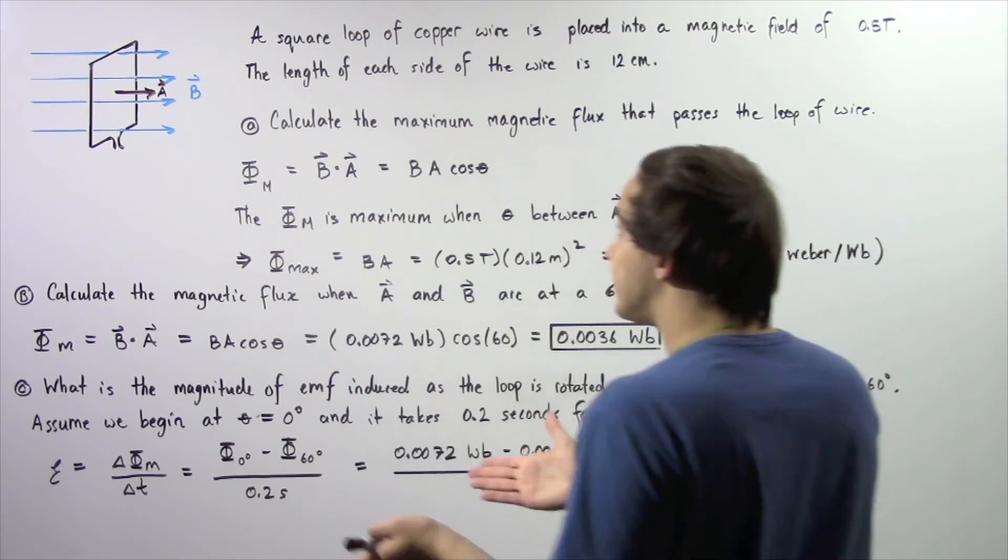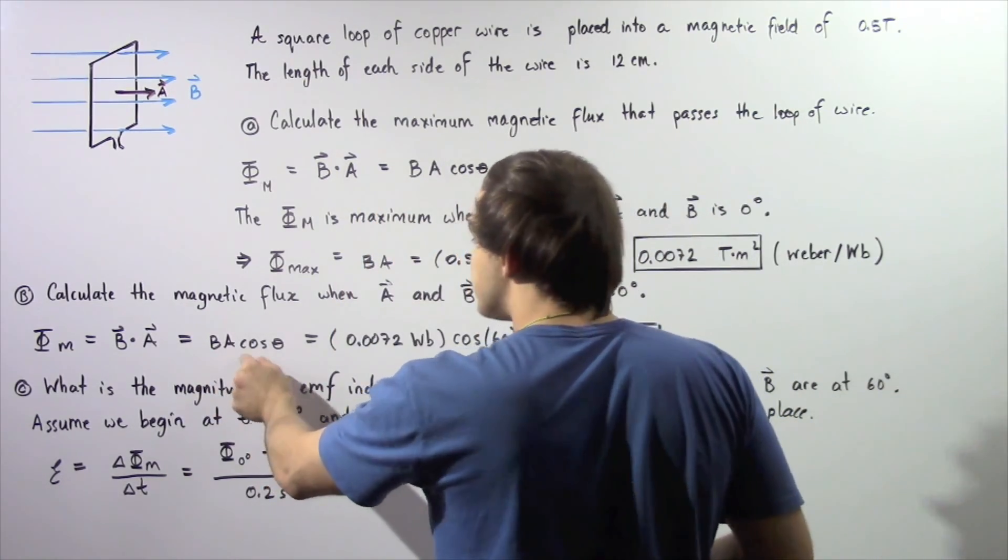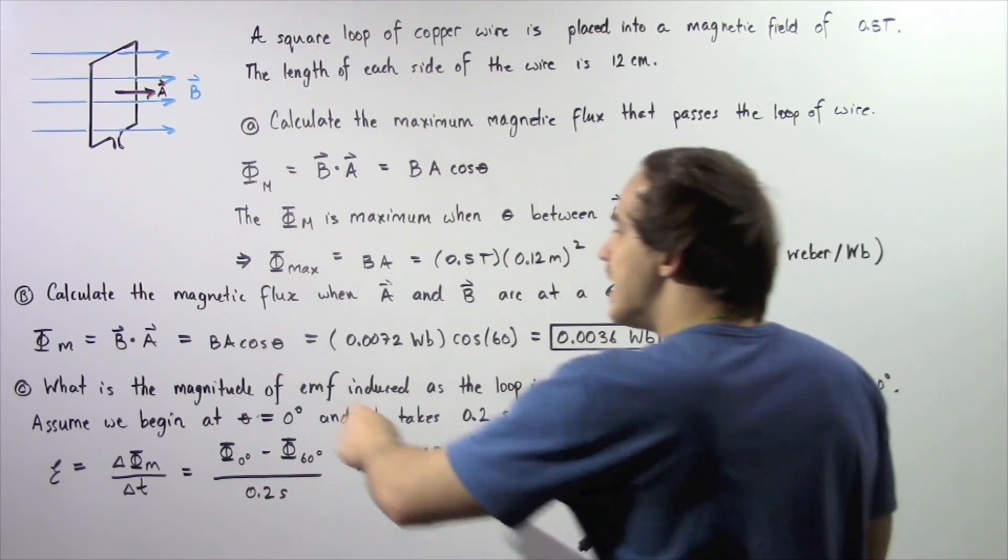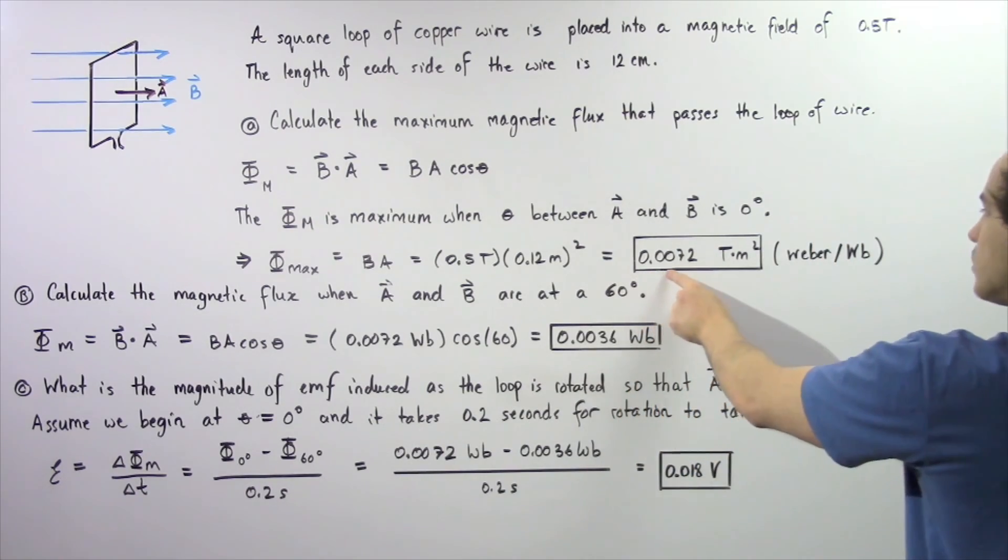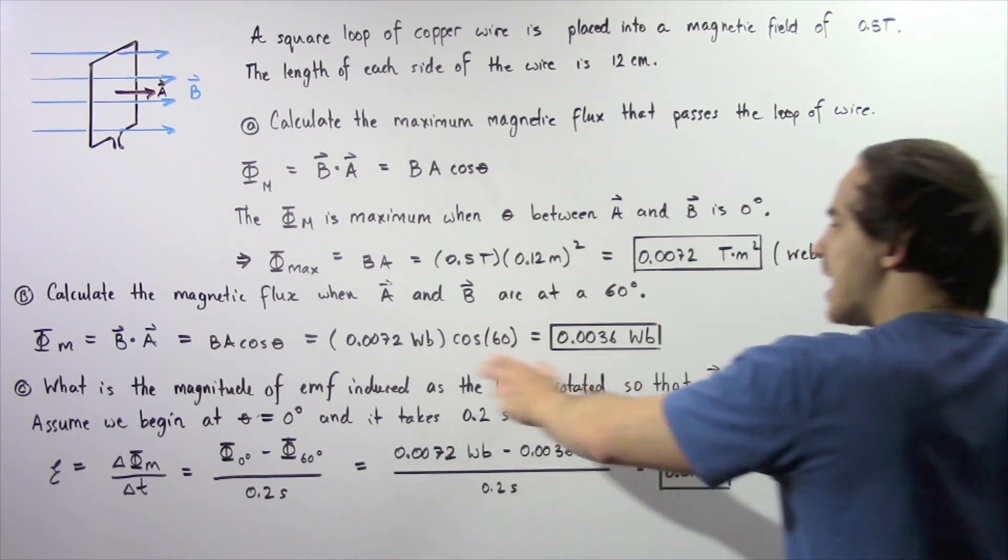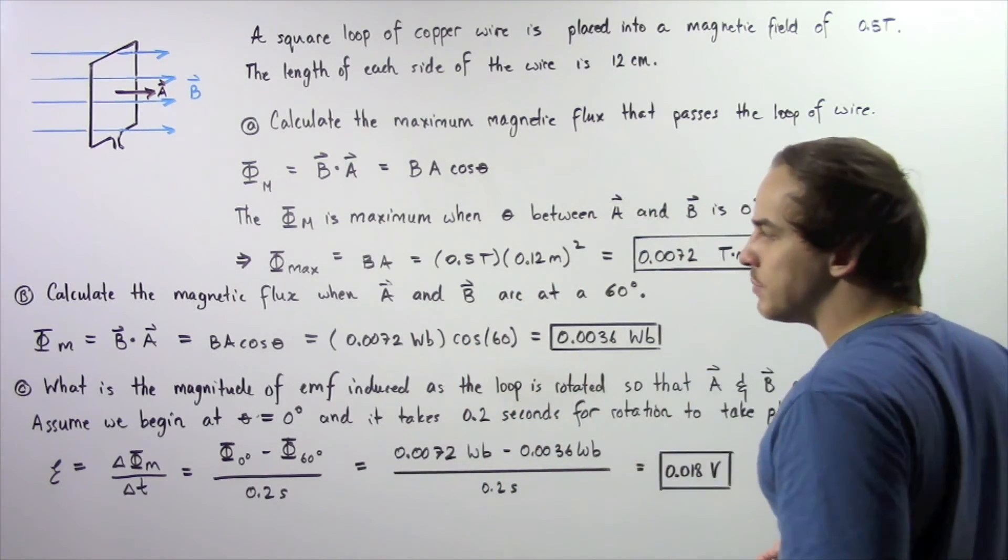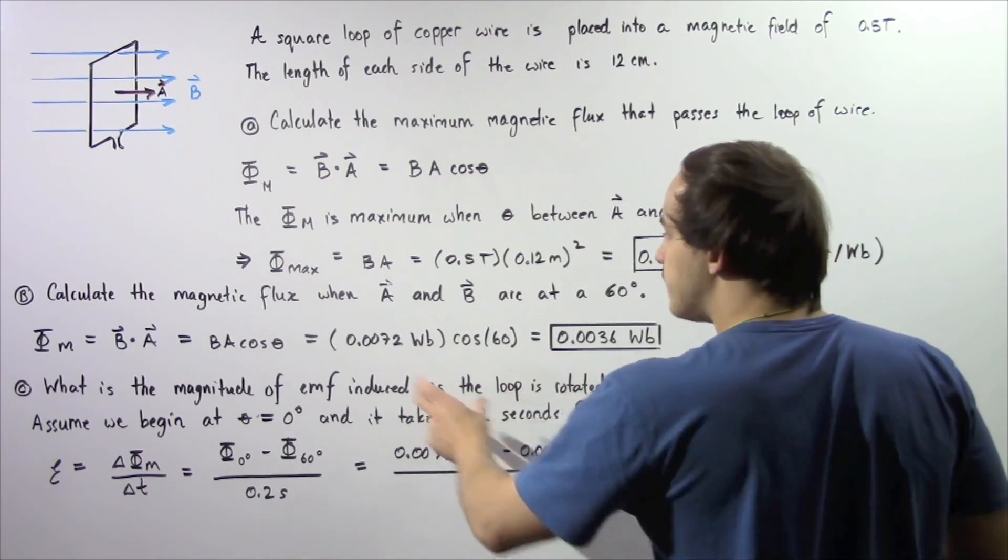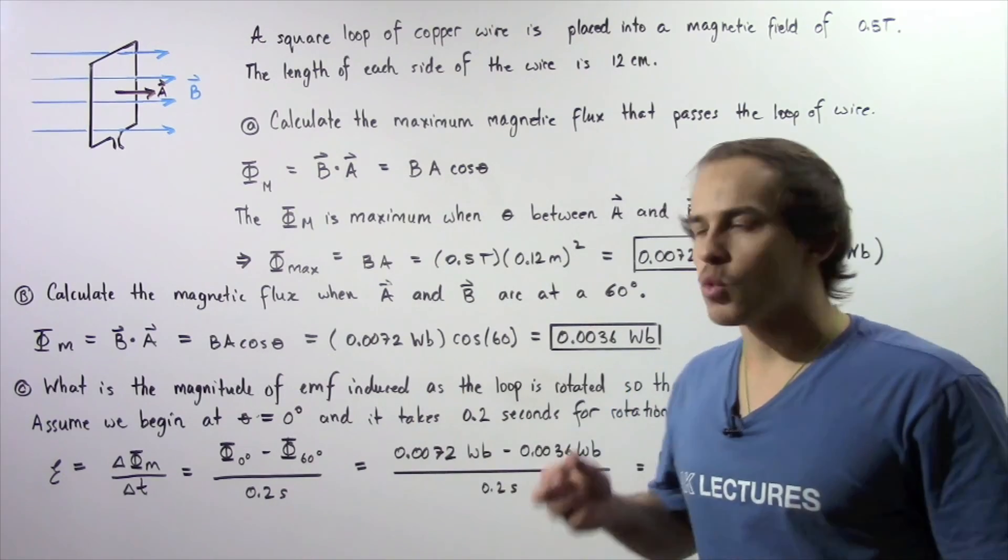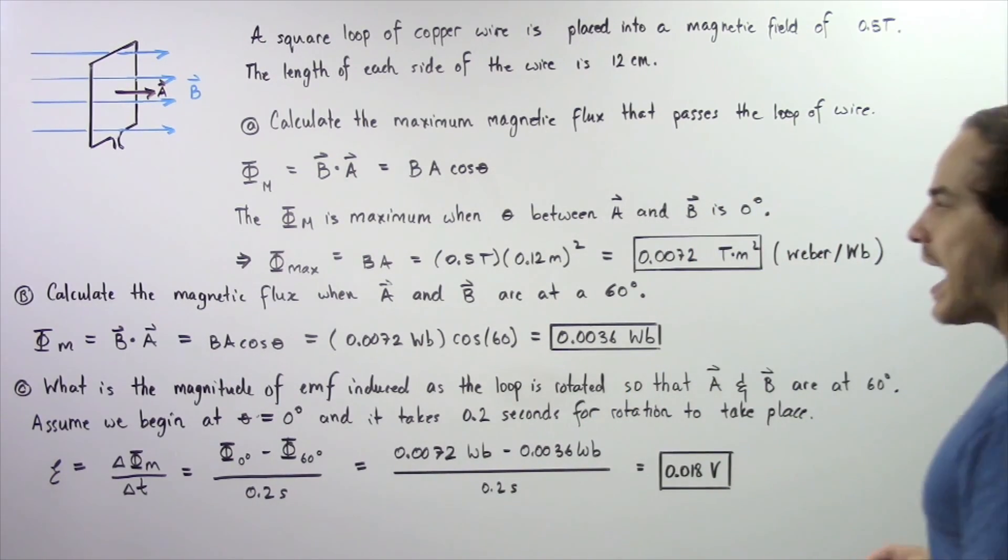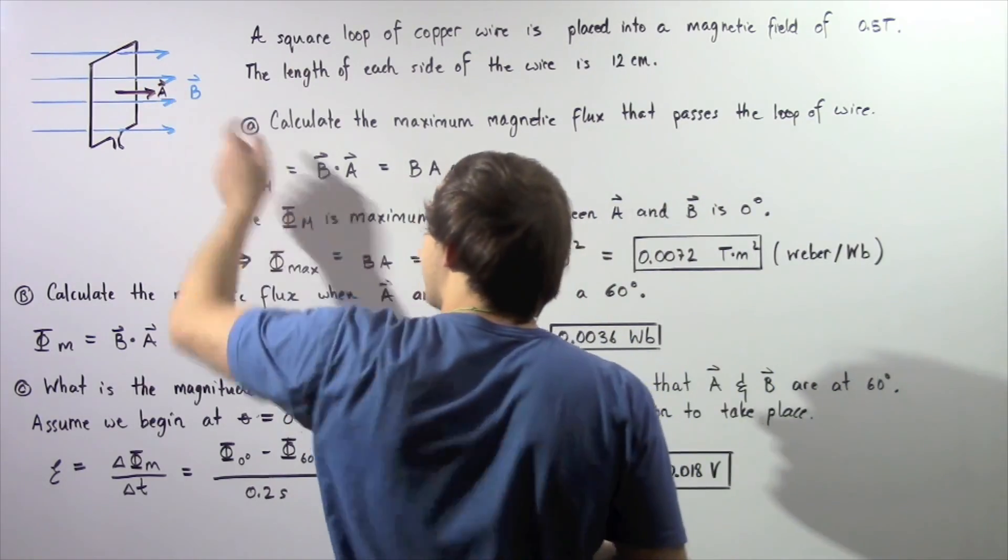So once again, to calculate the magnetic flux, we apply this equation: B times A times cosine of the angle theta. Now B times A was calculated in part A, it's equal to 0.0072 Webers. And we multiply that by cosine of the angle 60, which is simply 0.5. So 0.5 of this gives us 0.0036 Webers, which is the magnitude of our magnetic flux when the angle is 60 degrees between our B and our A.